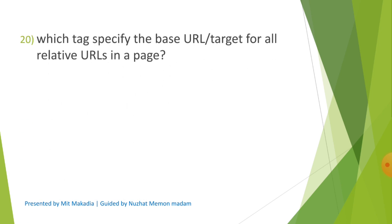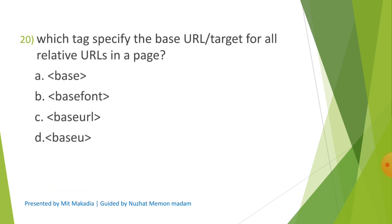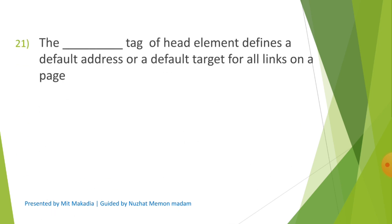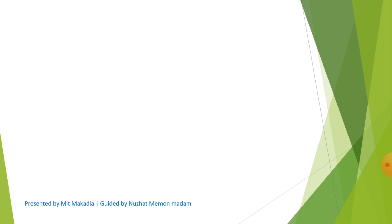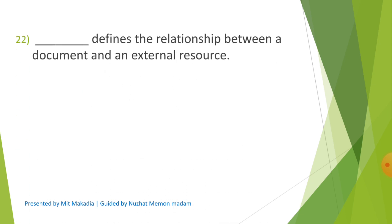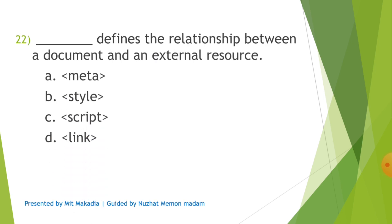Question 20: Which tag specifies the base URL target for all relative URLs in a page? Options are A) Base, B) Base font, C) Base URL, D) Base U. The correct answer is A) Base. Question 21: The dash tag of the head element defines a default address or a default target for all links on a page. Options are A) Link, B) Script, C) Base, D) None of these. The correct answer is C) Base. Question 22: What defines the relationship between a document and an external resource? Options are A) Meta tag, B) Style tag, C) Script tag, D) Link tag. The correct answer is D) Link tag.